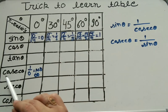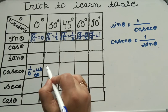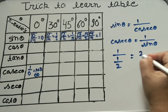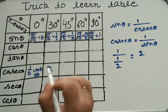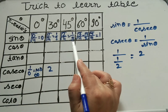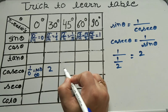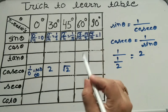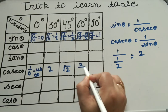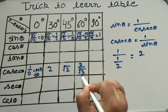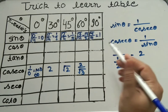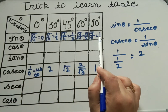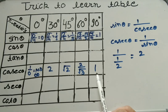For cosecant at 45 degrees: reciprocal of 1/√2 gives √2. For 60 degrees: reciprocal of √3/2 gives 2/√3. For 90 degrees: reciprocal of 1 is 1. So by solving the sin theta table, we have also solved the cosecant theta table using reciprocals.